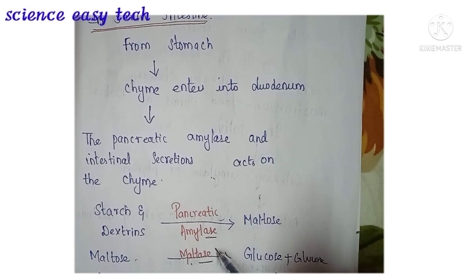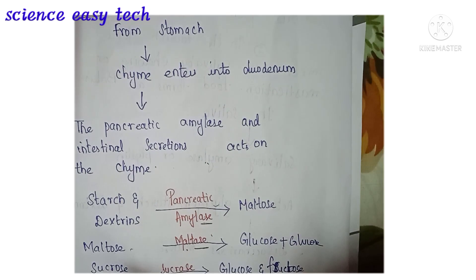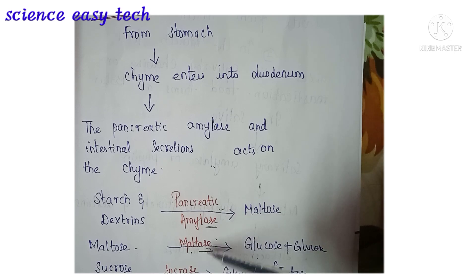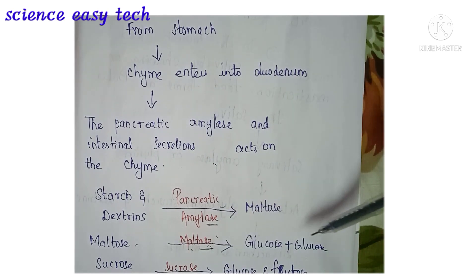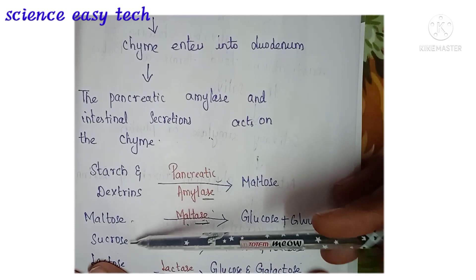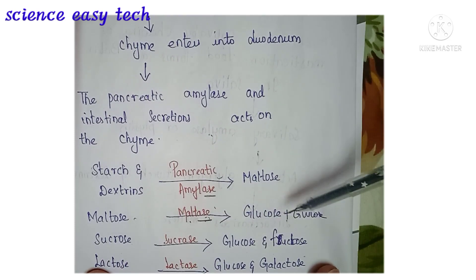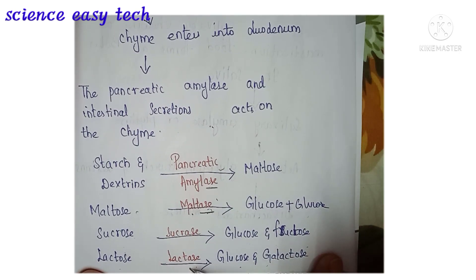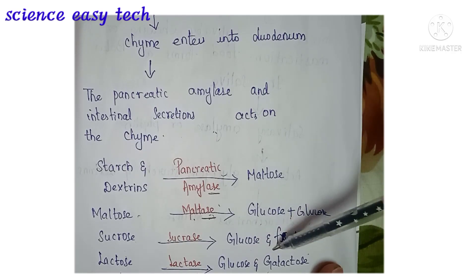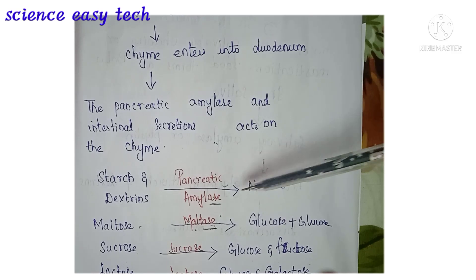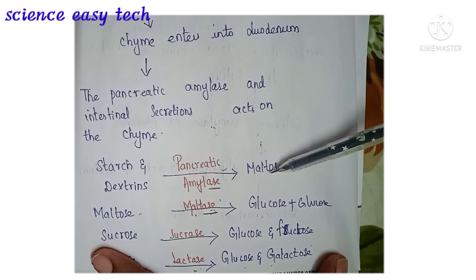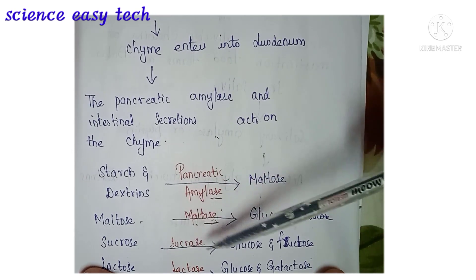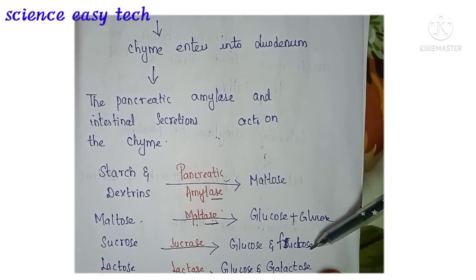The starch and dextrins, in the presence of pancreatic amylase, are converted to maltose. This maltose, in the presence of maltase enzyme, is converted to glucose plus glucose. Sucrose in the presence of sucrase enzyme is converted to glucose and fructose. Lactose in the presence of lactase enzyme is converted to glucose and galactose.